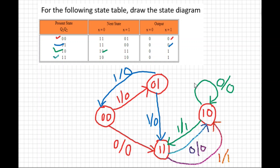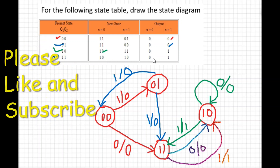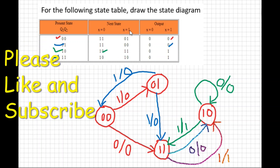So this is your state diagram. On each arrow, write the next state value and the output — for x=0 use those values, for x=1 use the corresponding ones. This is the way to draw a state transition diagram. I hope you got it. If you like the video, please like and subscribe. Thank you so much.